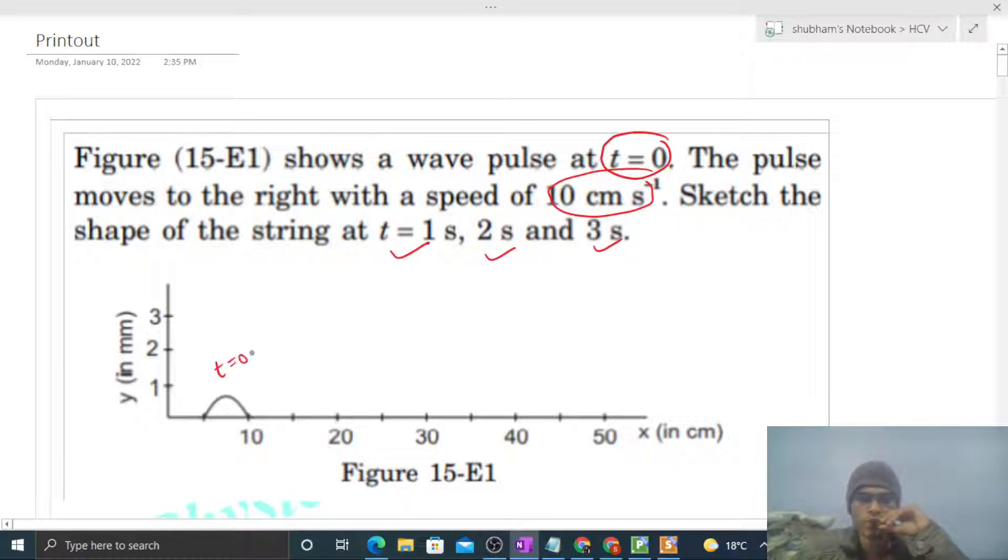At time t equals 0, the position of the pulse is shown. Let's say the back end is A and the front end is B. The speed given for this wave pulse is 10 cm per second. It means in 1 second, this wave pulse will shift 10 cm towards the right.